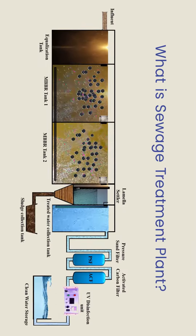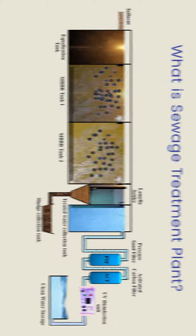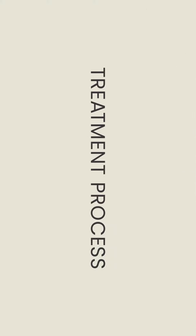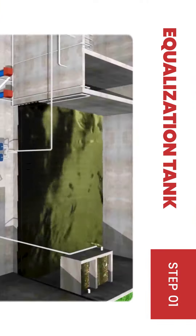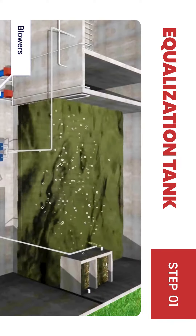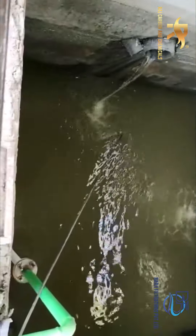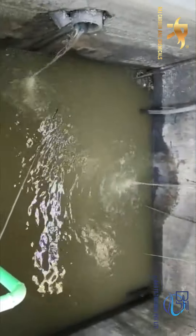A sewage treatment plant is a system that is used to clean and purify wastewater that is discharged into the environment. In the treatment process, the equalization tank provides some degree of purification by settling the suspended particles, which are then allowed to flow through to the next stage.